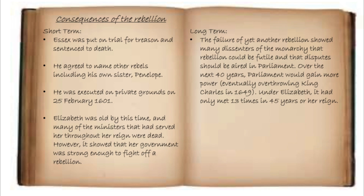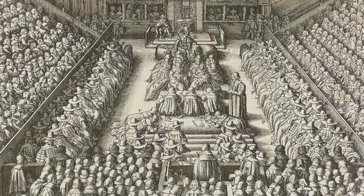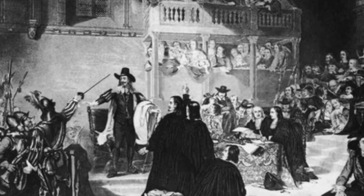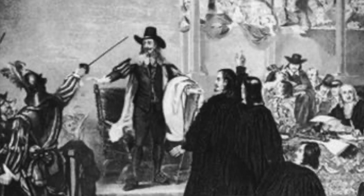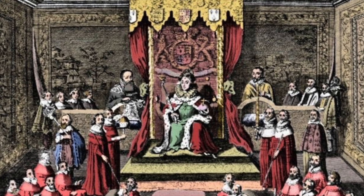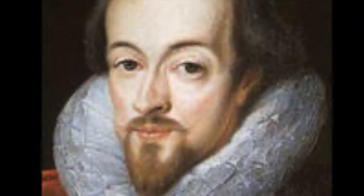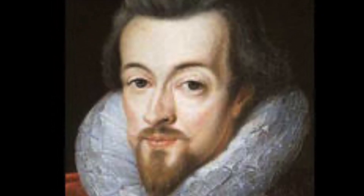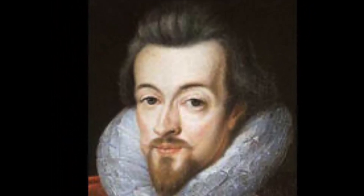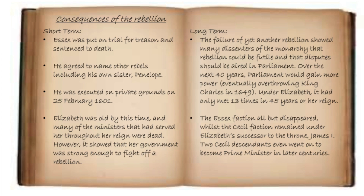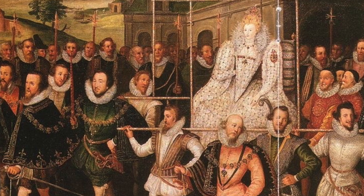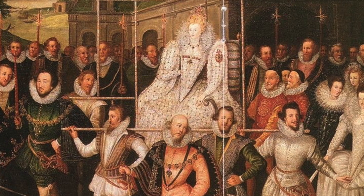Looking at the long-term consequences, the failure of yet another rebellion showed many dissenters of the monarchy that rebellion could be futile and that disputes should be aired in Parliament. Over the next 40 years, Parliament would gain more power, eventually overthrowing King Charles in 1649. Under Elizabeth, Parliament had met only 13 times in 45 years of her reign. The Essex faction had all but disappeared, whilst the Cecil faction remained under Elizabeth's successor, James I. Two Cecil descendants even went on to become Prime Minister in later centuries. The patronage system also had to be reassessed due to the conflict it had caused.